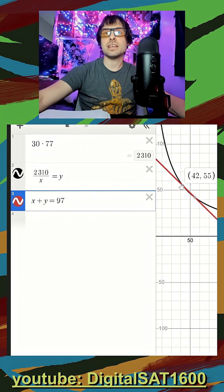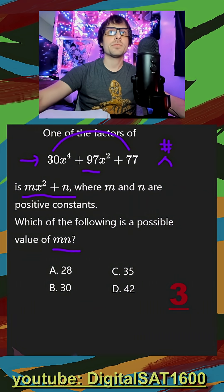What's super nice is I can just use Desmos to get my two factors here. It's going to be 42 and 55. So I jump back to my paper and write down 42 and 55.